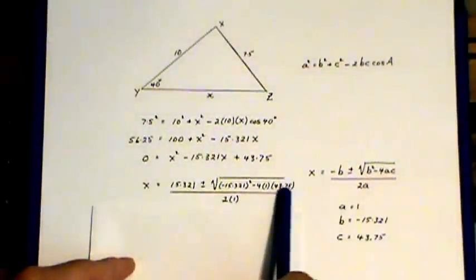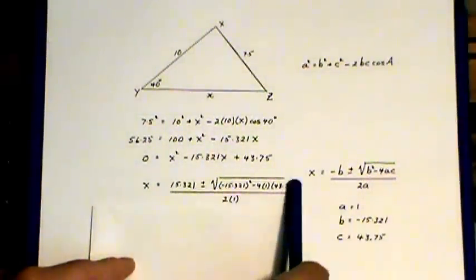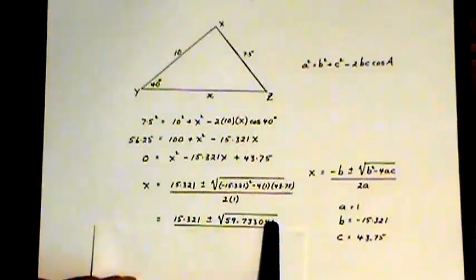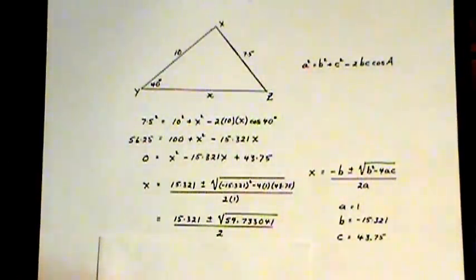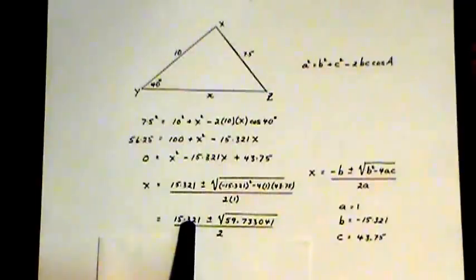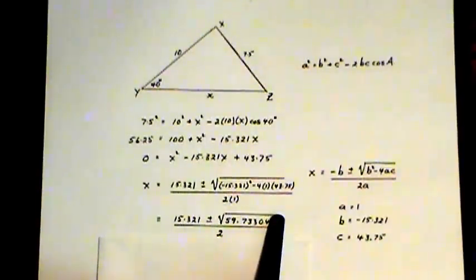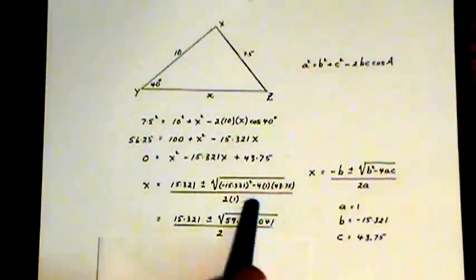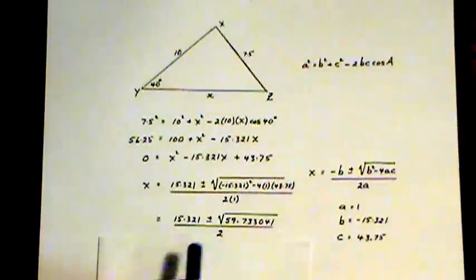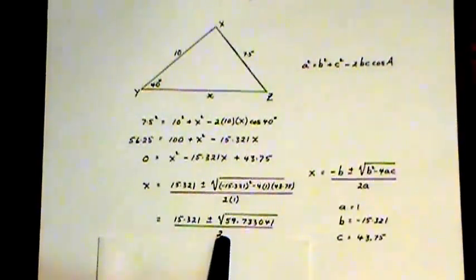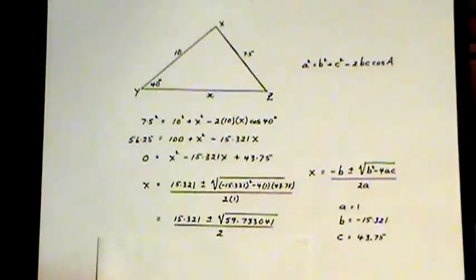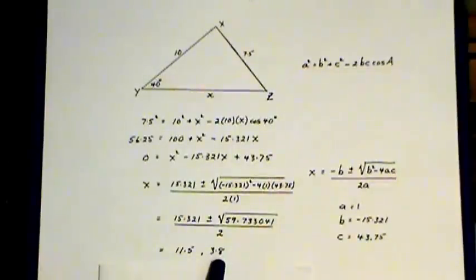I always solve for what's in the square root first. That gives me this number. When you do this on your calculator, make sure that when you do the 15.321 plus the root, enter that before you divide by 2 so that you don't just divide the last part by 2. Enter the whole thing, divide by 2, and also do it with the minus sign.